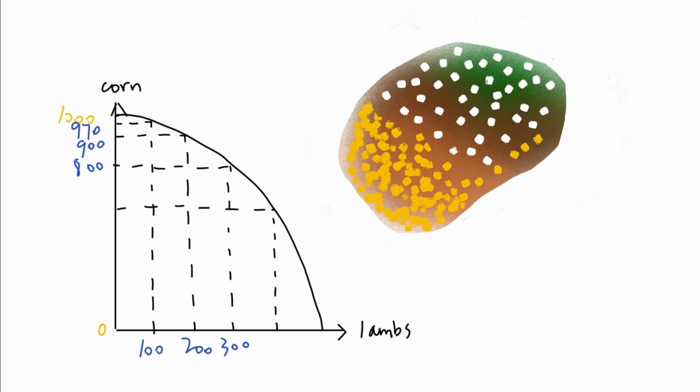However, the next lambs that we add will have to take up the land where it's better suited for growing corn than grazing lambs. Perhaps the soil is full of nutrients good for corn, but they don't really benefit the lambs very much. Now, if we choose to keep on swapping corn for lambs, we will have to give up 200 units of corn for 100 lambs.